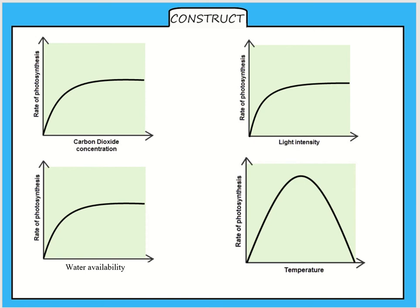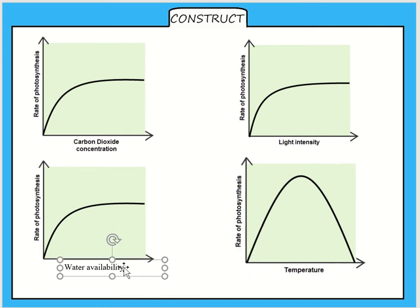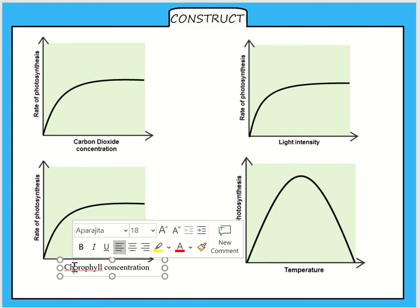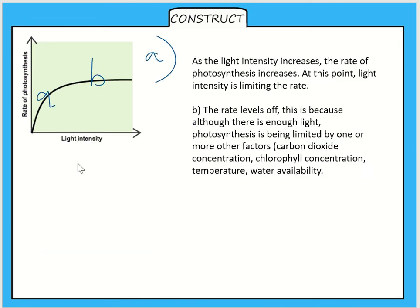What I would like you to do is draw out all of these graphs. You'll notice chlorophyll concentration is not there, so you'd need four graphs. The chlorophyll graph is exactly the same as this water availability graph, so you can just put chlorophyll concentration. All those graphs are the same except for the temperature one. That's different.